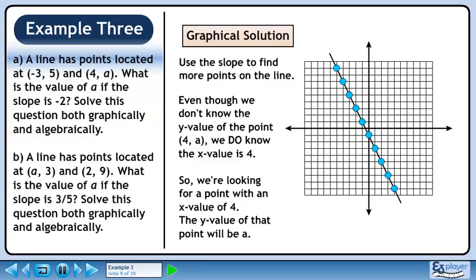Let's speed things up by plotting all of the points we can get using the slope. The point we are looking for is (4, -9), so the value of a is -9.